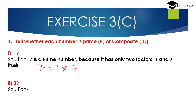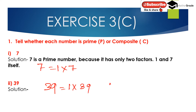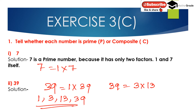A prime number has only 2 factors, not more than 2. Next, 39. The number 39 has more than 2 factors: 1 multiplied by 39, and 3 multiplied by 13. So the factors of 39 are 1, 3, 13, and 39. Since it has more than 2 factors, 39 is not a prime number — it is a composite number.